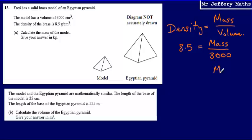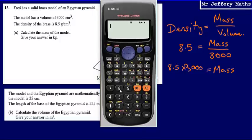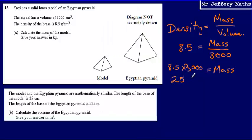To work out the mass, all I need to do is multiply 8.5 by 3,000. So 8.5 multiplied by 3,000 gives me an answer of 25,500. Looking at our units — grams per centimetre cubed — that means we're dealing with 25,500 grams.